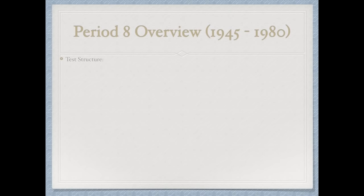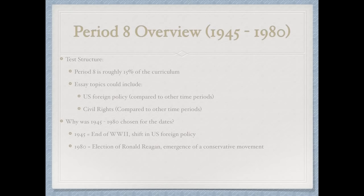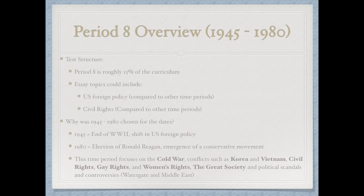Period 8 runs from 1945 to 1980 and is 15% of the curriculum — the second largest time period. Essay topics could include US foreign policy and civil rights compared to other time periods. 1945 marks the end of WWII and a shift in US foreign policy; 1980 marks the election of Ronald Reagan and the emergence of a conservative movement. Key topics: the Cold War, Korea, Vietnam, civil rights, gay rights, women's rights, the Great Society, and political scandals like Watergate and Middle East tensions.